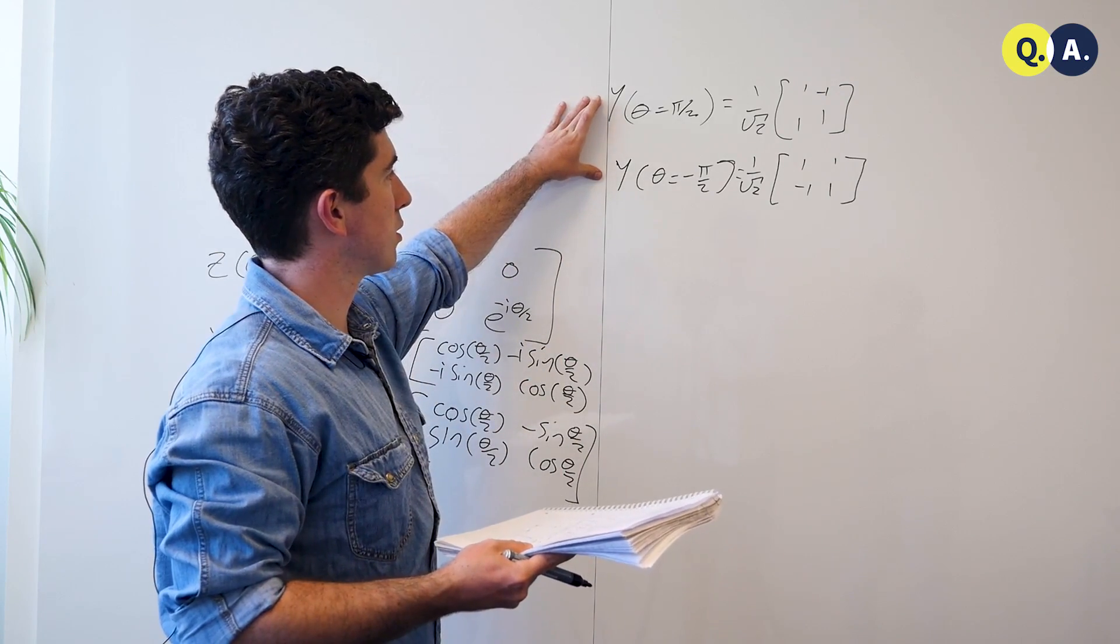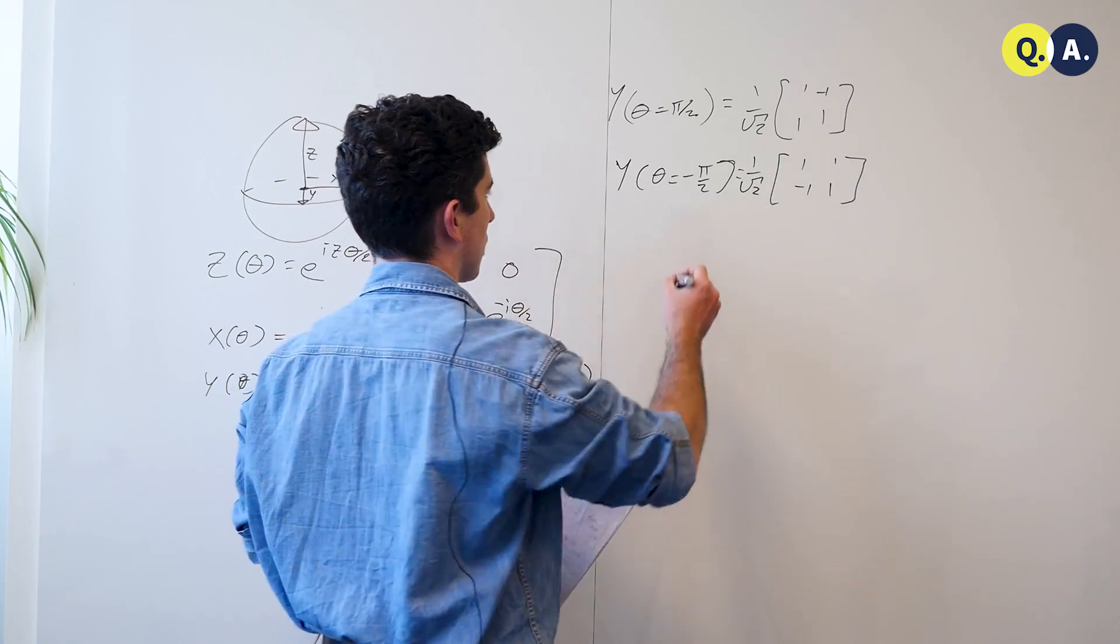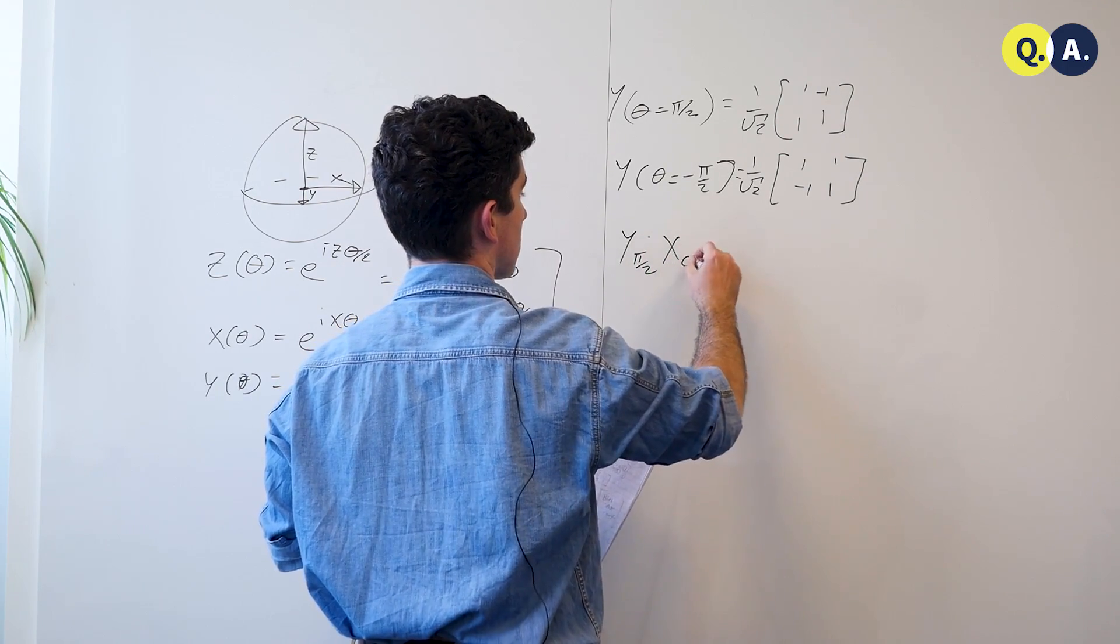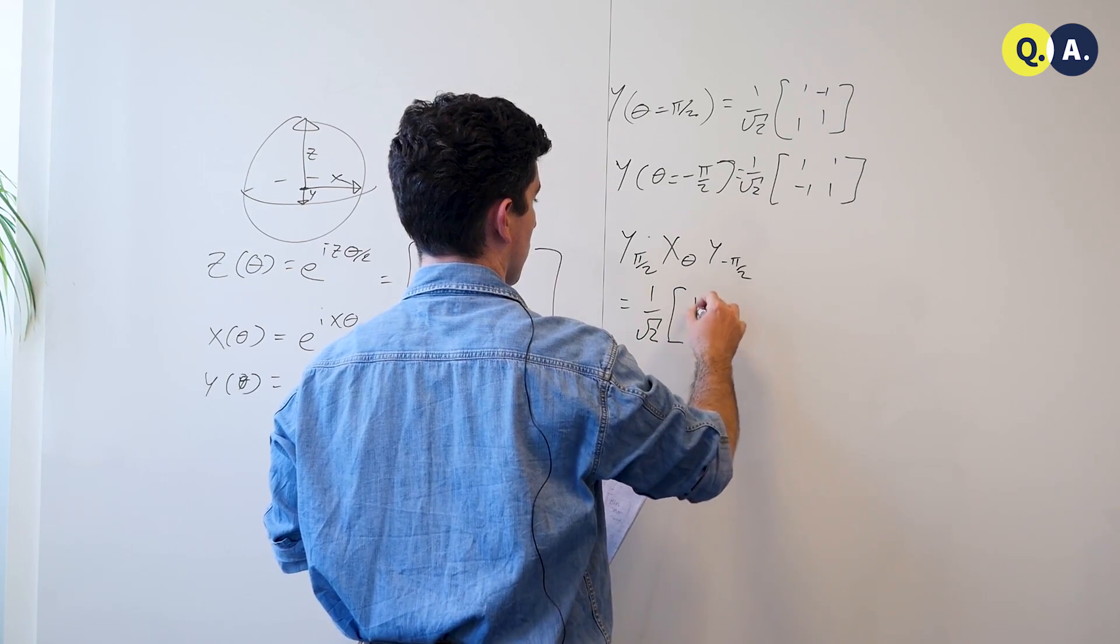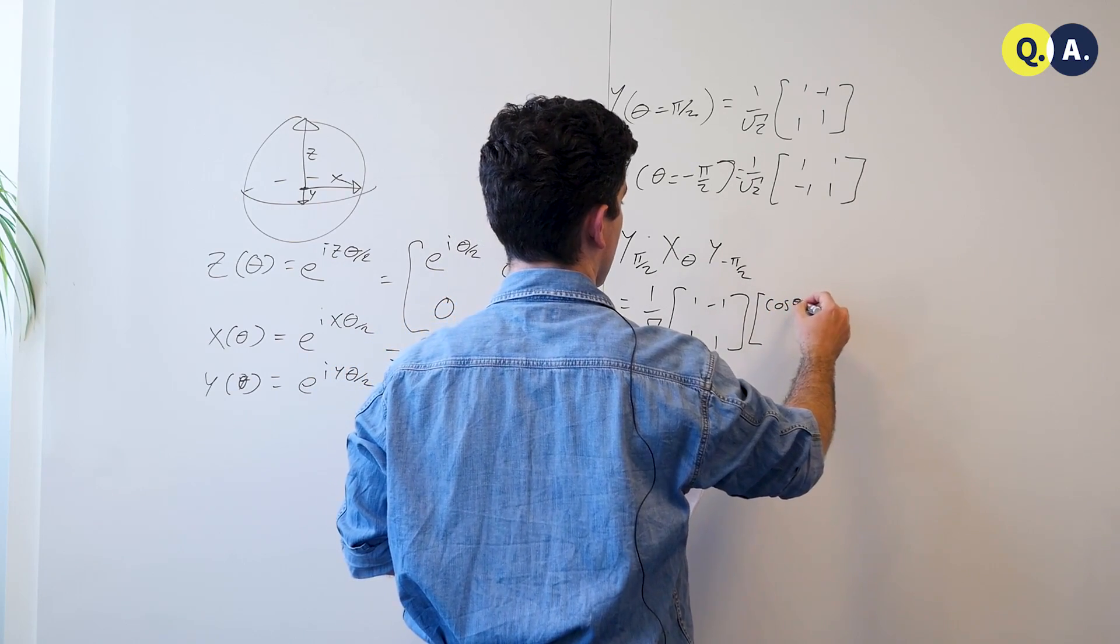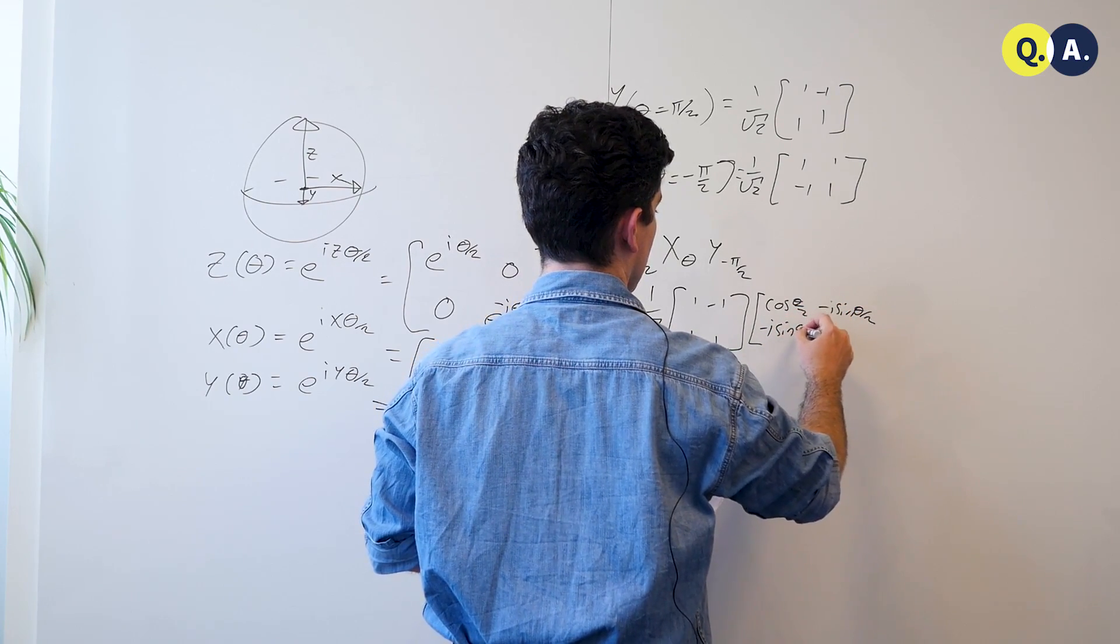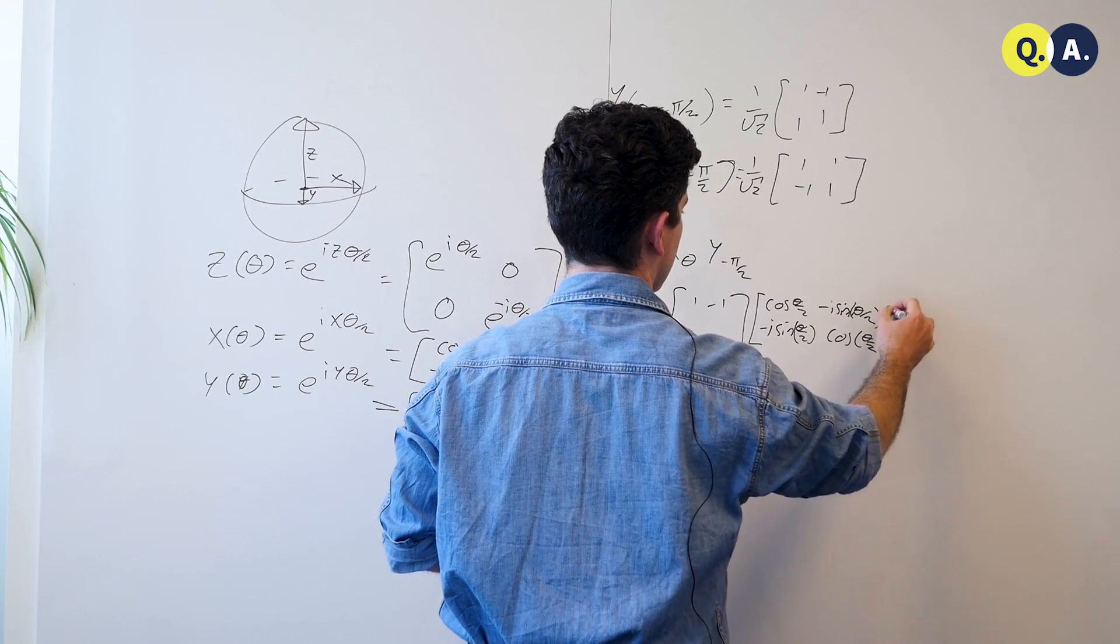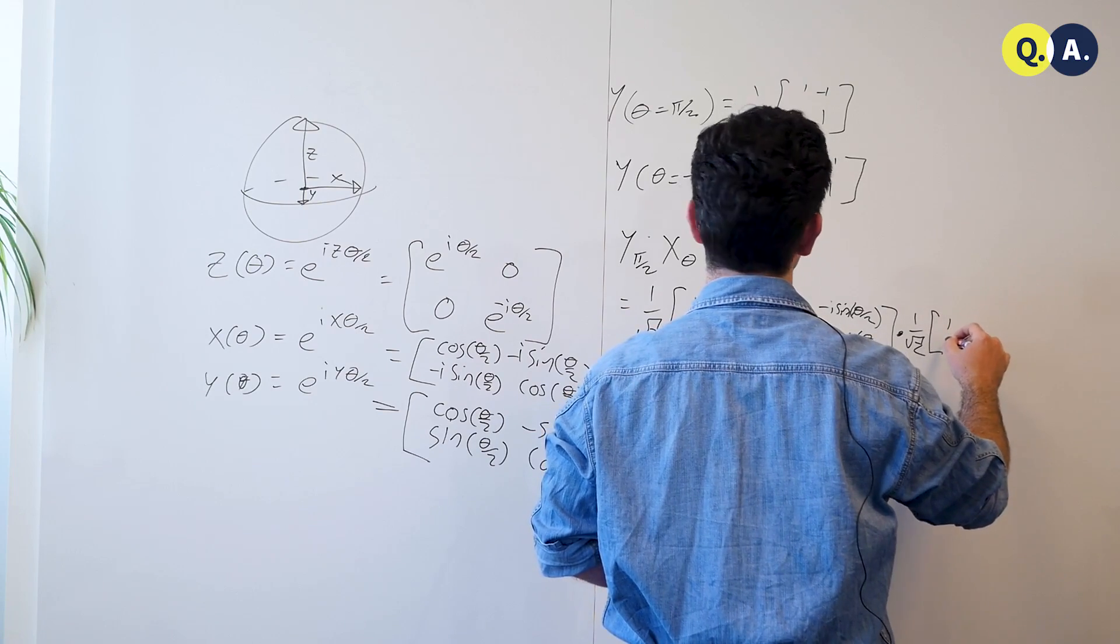Now let's take a look at what happens if we sandwich an x rotation about some angle theta with these two matrices, which we lovingly call y90 and y-90, because they're 90 degree rotations. So, we're going to get y(pi/2) * x(theta) * y(-pi/2) is equal to 1 over root 2 [1, 1; -1, 1], cosine of theta over 2, minus i sine theta over 2, minus i sine theta over 2, cosine of theta over 2.